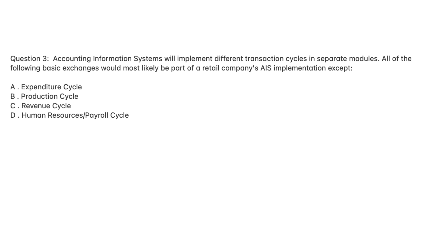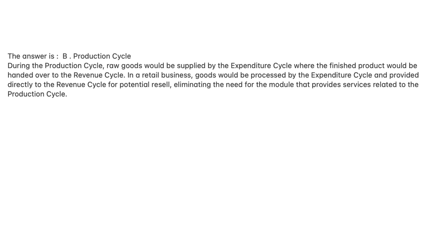Question 3. Accounting information systems will implement different transaction cycles in separate modules. All of the following basic exchanges would most likely be part of a retail company's AIS implementation except: A. Expenditure cycle. B. Production cycle. C. Revenue cycle. D. Human resources/payroll cycle. The answer is B, production cycle.